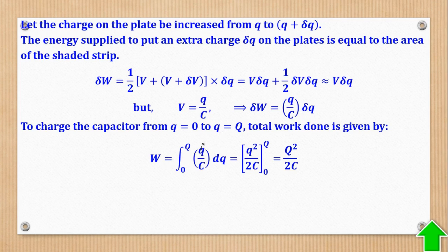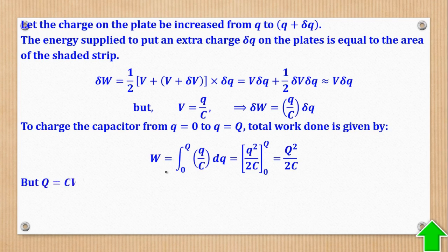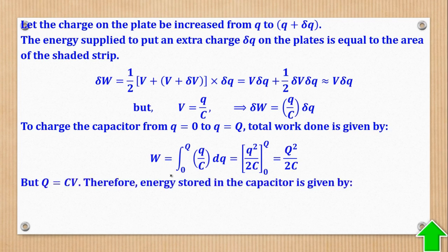When we integrate Q over C with respect to Q from 0 to Q, we get one-half Q squared over C. Substituting the limits — substitute Q for the upper limit and 0 for the lower limit — gives one-half Q squared over C minus zero. So the total work done is Q squared over 2C. Since the total work done is the same as the energy stored, this formula — W equals Q squared over 2C — is the formula for energy stored in a charged capacitor.